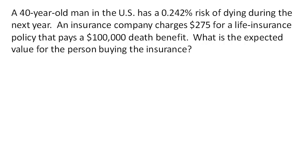A 40-year-old man in the US has about a 0.242% risk of dying during the next year. An insurance company charges $275 for a life insurance policy that pays a $100,000 death benefit — that is, it pays out if the person dies during the year. Otherwise, the company keeps the $275 and the person gets nothing. So what is the expected value for the person buying the insurance?